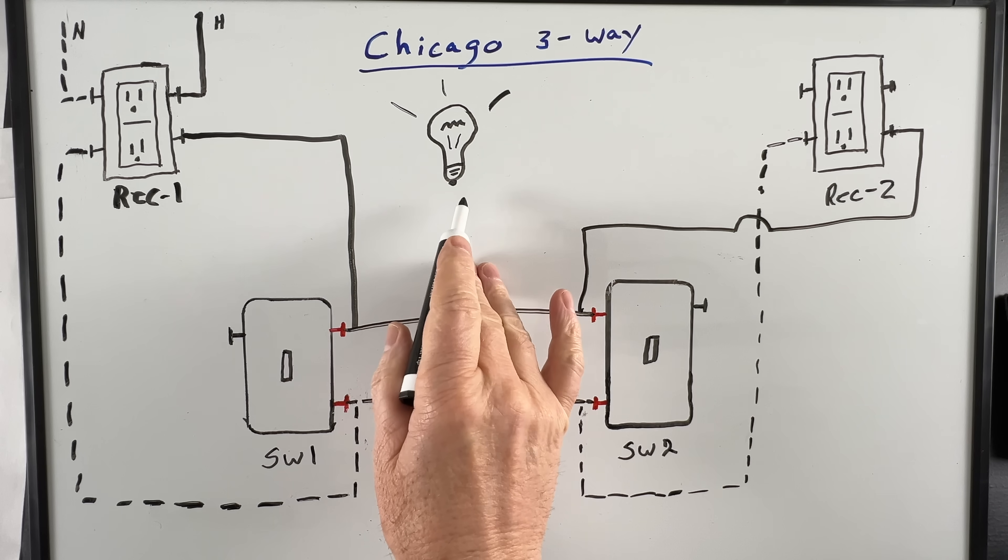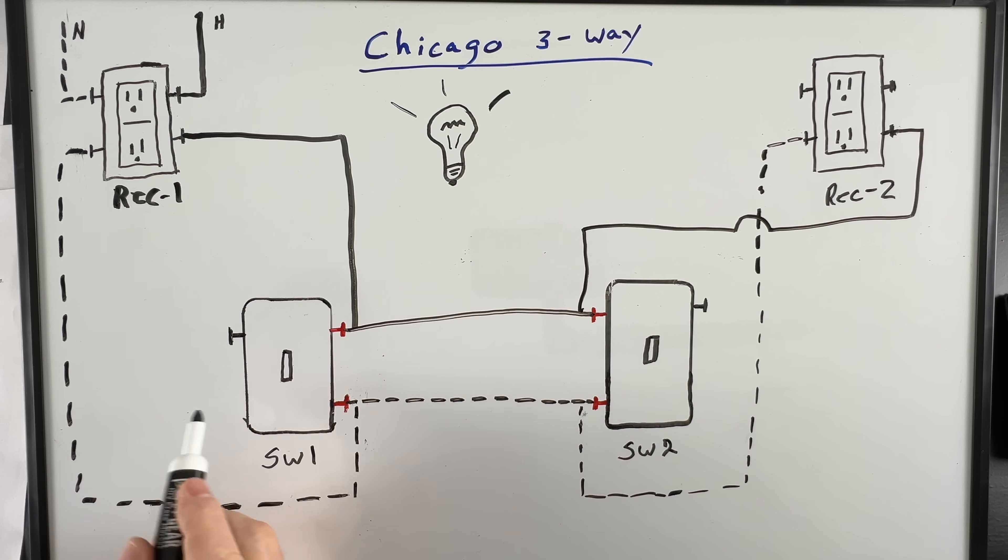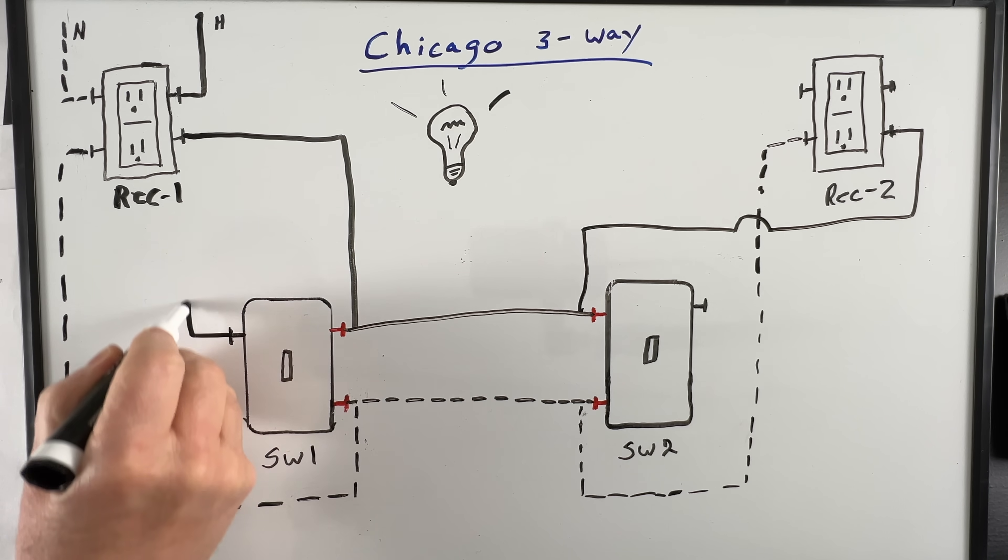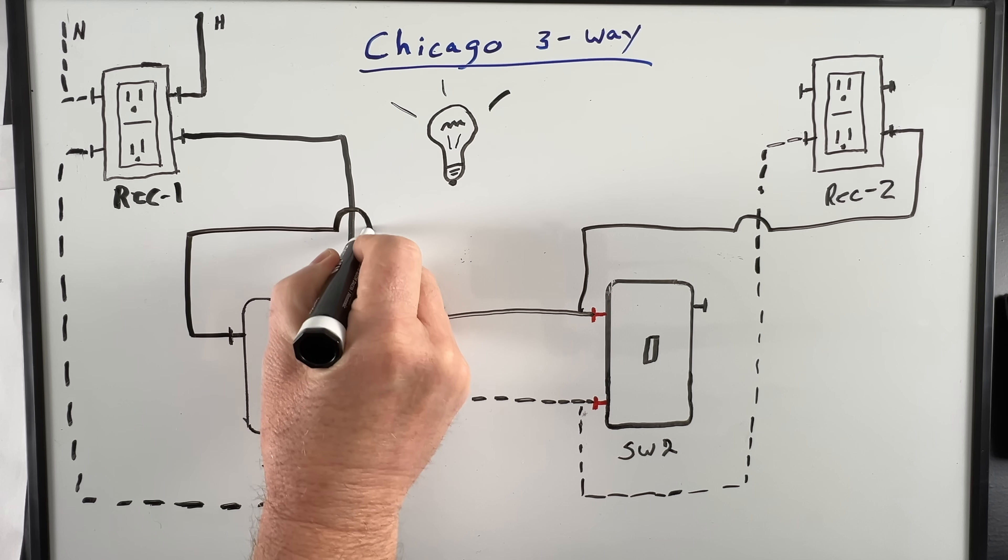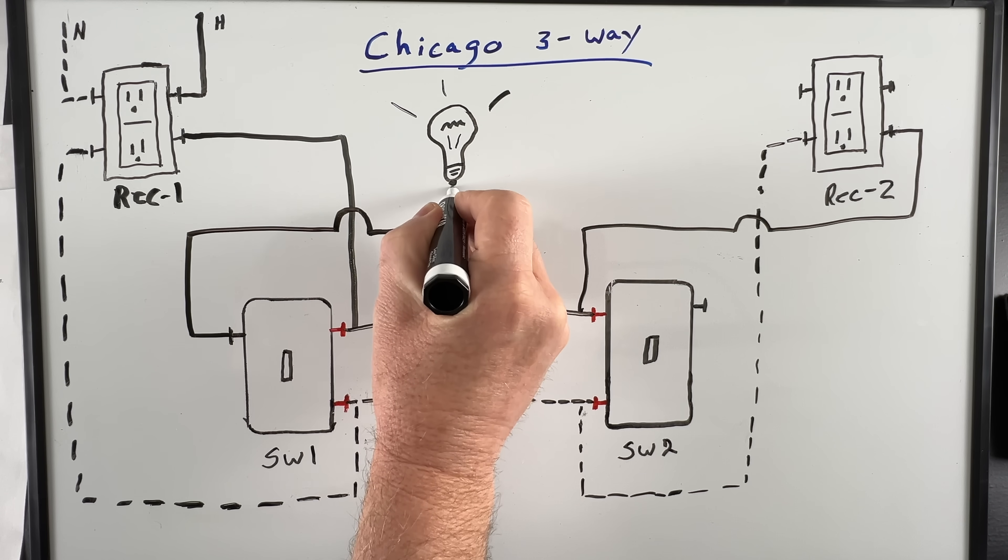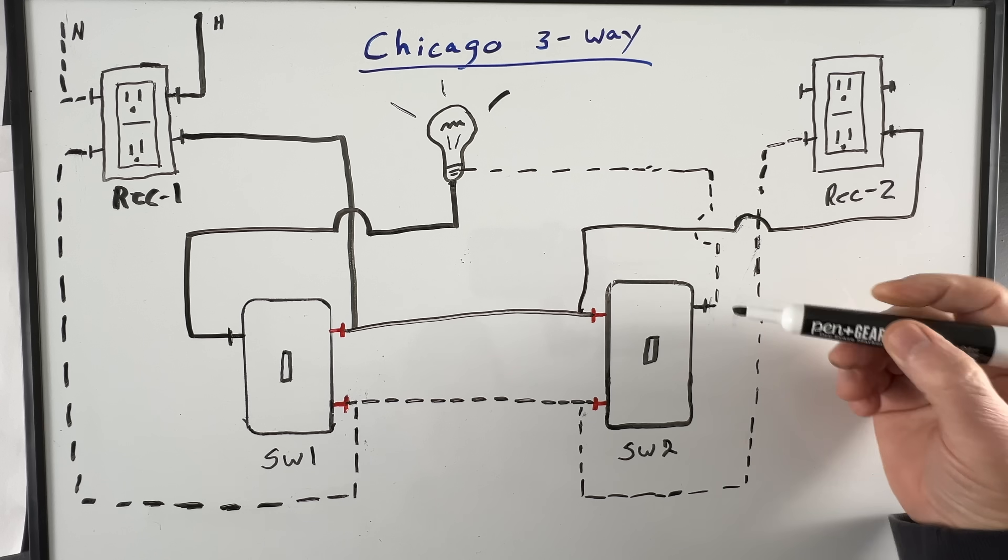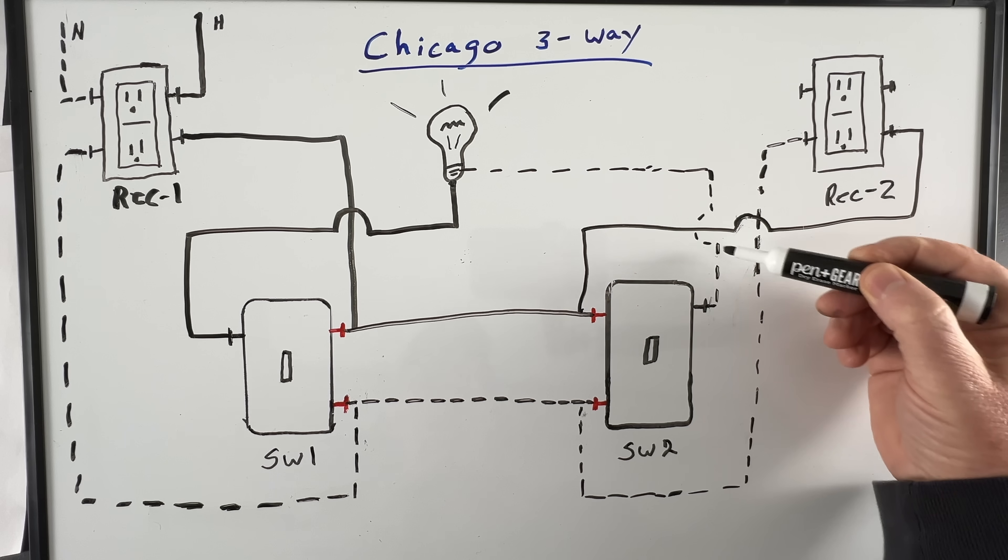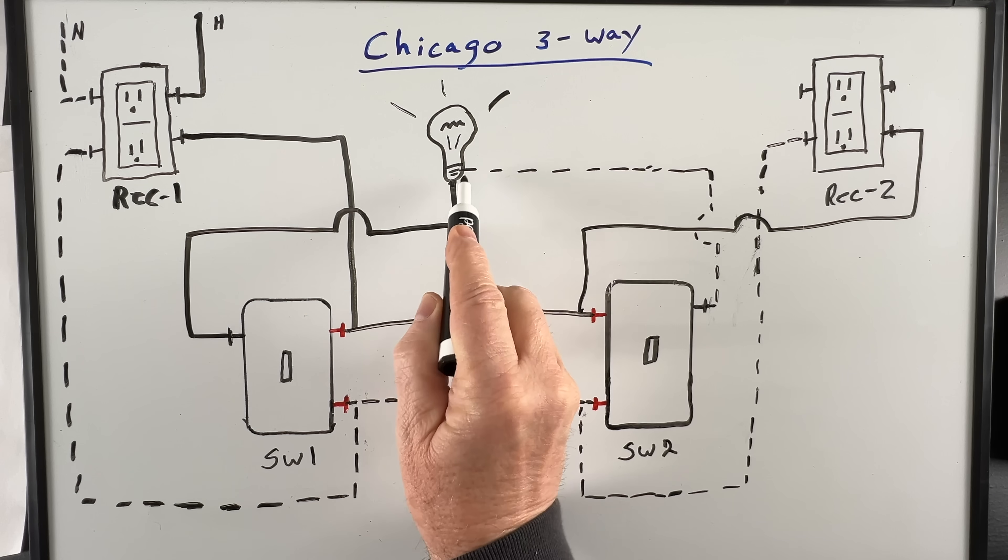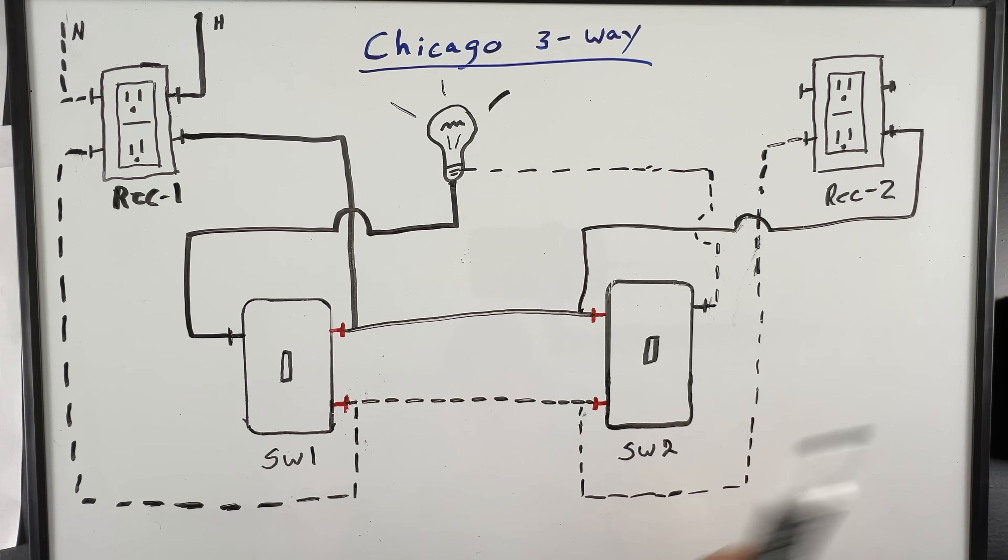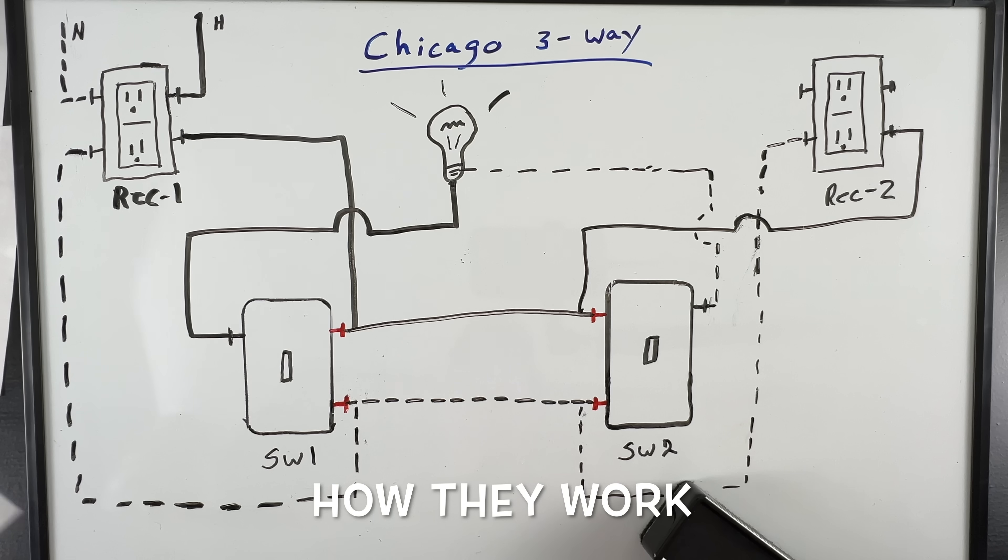Now we need to connect our light. We'll take our black switch leg wire from the common screw on switch one and we'll go up to the hot lead on the light. Then we'll take our white neutral wire from the black common screw on switch two up to the white neutral wire on our light. And that's it, our wiring is done.